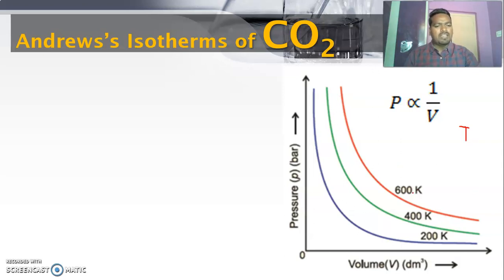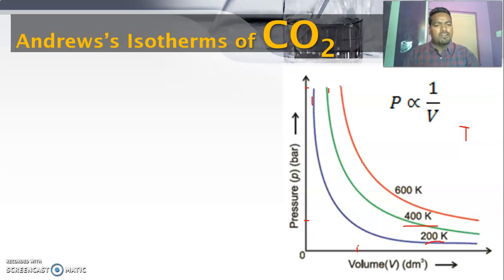Here there are three lines at different temperatures. The red line is decreasing — at high pressure the volume is very less, and at very low pressure the volume is very high — so this follows Boyle's law. This is the isotherm at 600 K. The green curve is at 400 K, and the blue curve is at 200 K. At different constant temperatures we observe different curves. At higher temperatures, both pressure and volume are relatively higher. This is called the isotherm for a general gas.